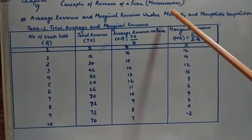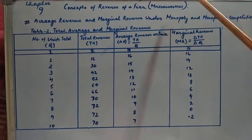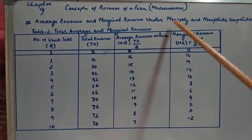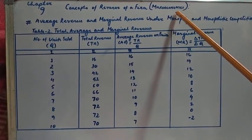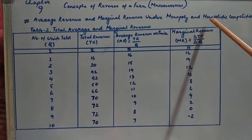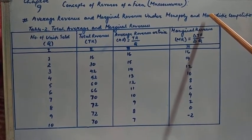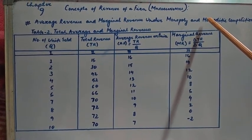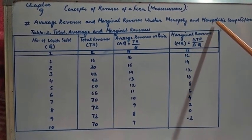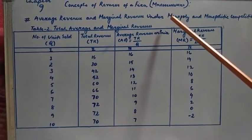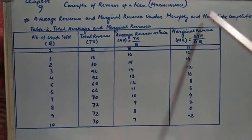Monopoly means there is only one firm controlling the whole market system — setting prices, determining supply — all regulated by a single firm. Monopolistic competition means many large firms or companies competing with each other. Oligopoly is similar to monopolistic competition, but involves small firms competing with each other in the market.